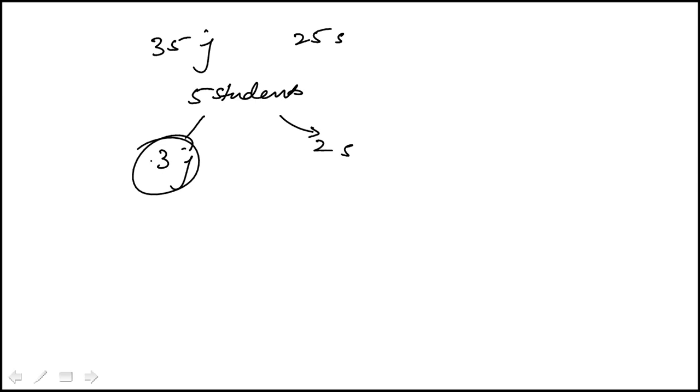First, we have to figure out how many different ways we can select three juniors from a set of 35. This is a combination, 35 choose 3, order doesn't matter.